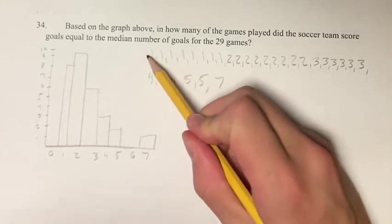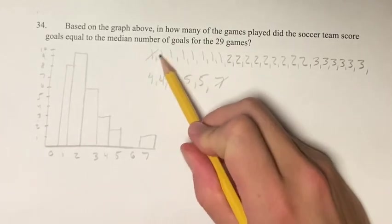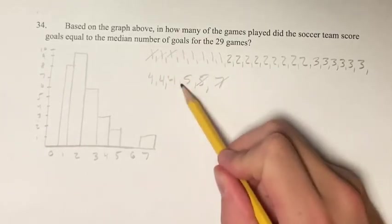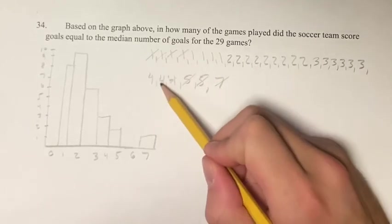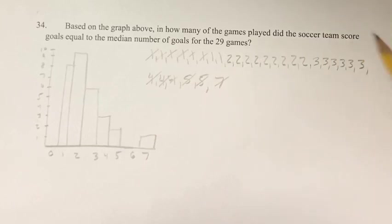So what we do is we start at each end, start crossing off numbers, moving towards the middle, until eventually we will reach our median score.